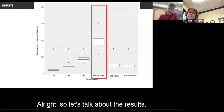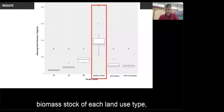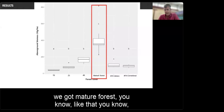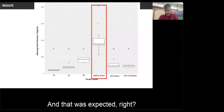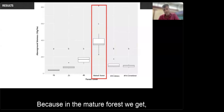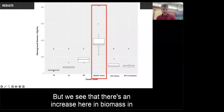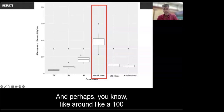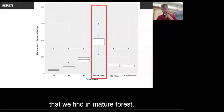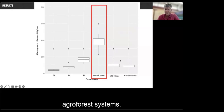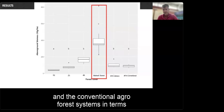Looking at the results on biomass stocks by land use type: mature forest has much more biomass than any other forest type in the landscape, as expected — it is very old forest with large trees that accumulate a lot of biomass. We see an increase in biomass in secondary forest; around 100 to 120 years, secondary forest may reach the same biomass level as mature forest. In agroforestry systems, there is no significant difference between Cabruca and conventional agroforestry in terms of biomass.